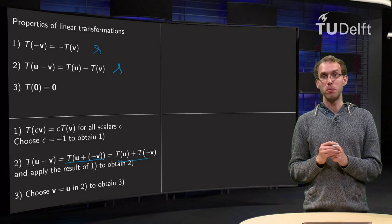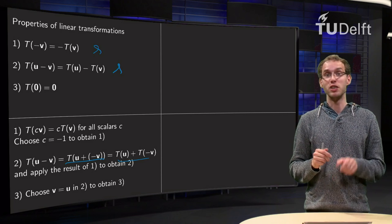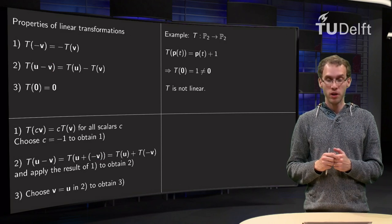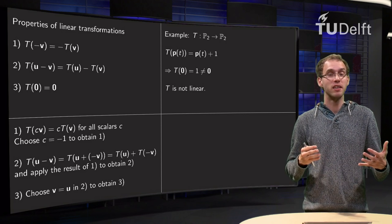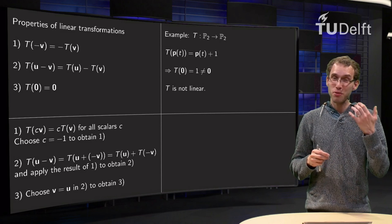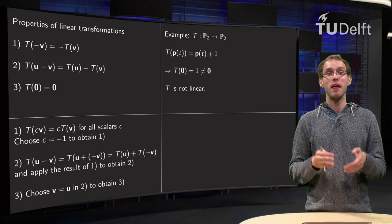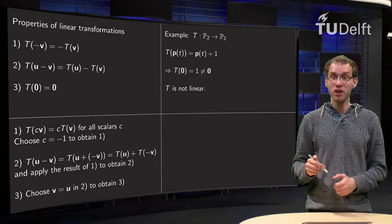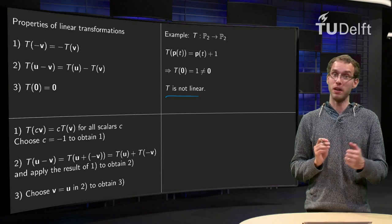So there we have our three properties, and we can use those to see straight away that some transformations are not linear. Look for example at the transformation from P2 to P2 which is given by adding one to a polynomial. That doesn't do much, right? You just add one to any function. But this transformation is not linear, because what happens if you compute T of zero? Well, T of zero equals zero plus one equals one, so T of zero is not equal to zero, therefore T is not linear.